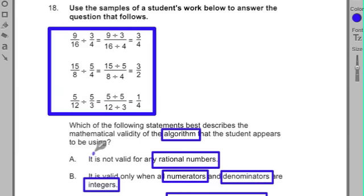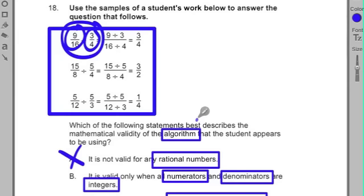Now, it says here, answer choice A says it's not valid for rational numbers. Well, guess what? We just tested it out with rational numbers and it works. So that's incorrect. B is valid only when the numerator and denominator are integers. Well, that's not 100% true because guess what? Our rational numbers were fractions and both the numerator and denominator were fractions and it still worked. So that's not true.